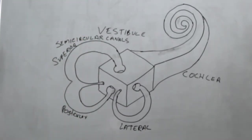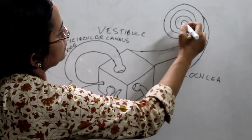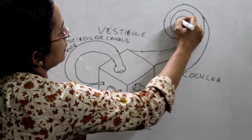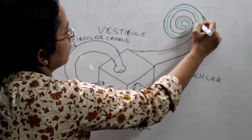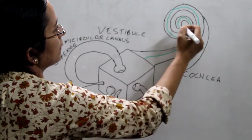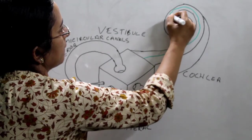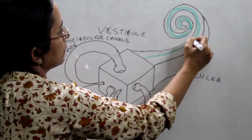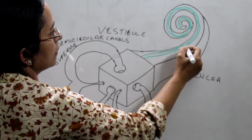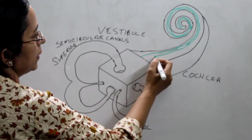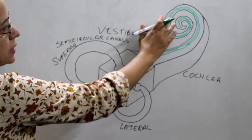Inside the bony labyrinth I will draw the membranous labyrinth in green. So inside this there is a membranous labyrinth, communicating through the system. This is the membranous labyrinth — it is called the cochlear duct.